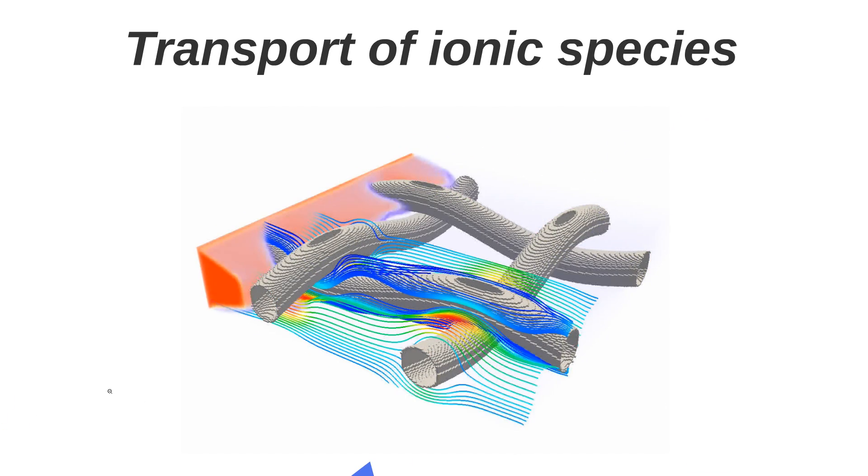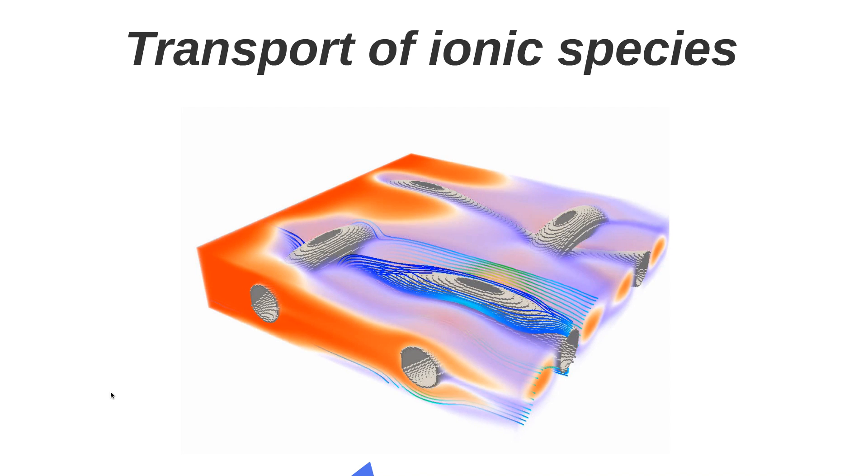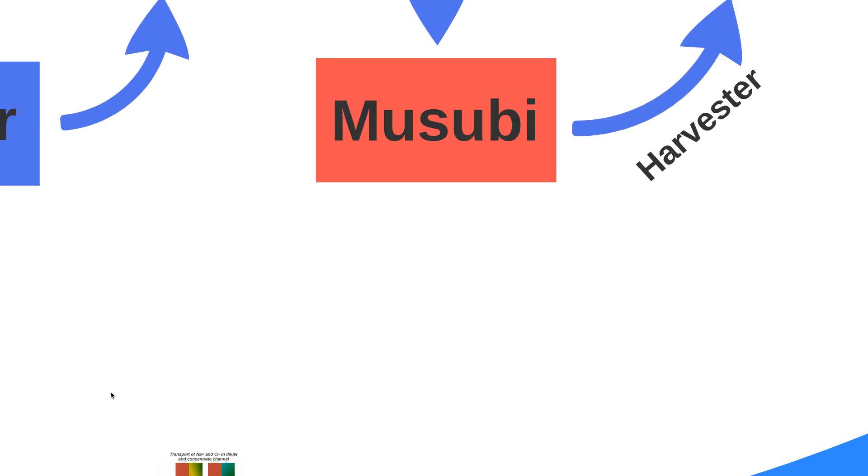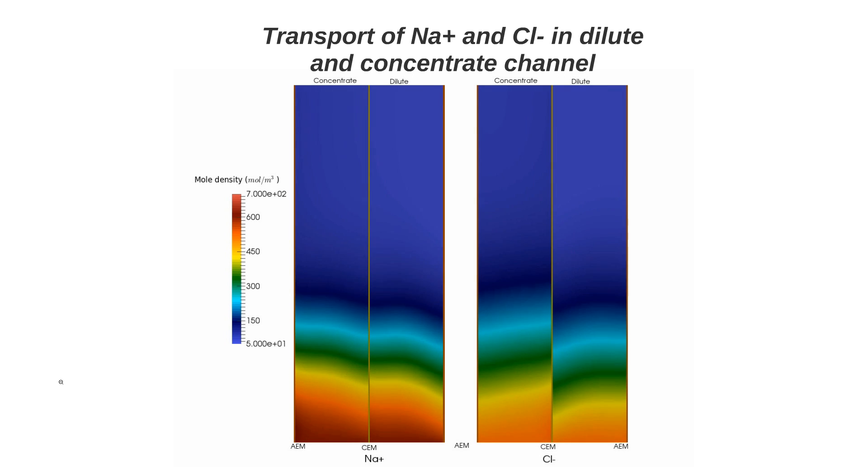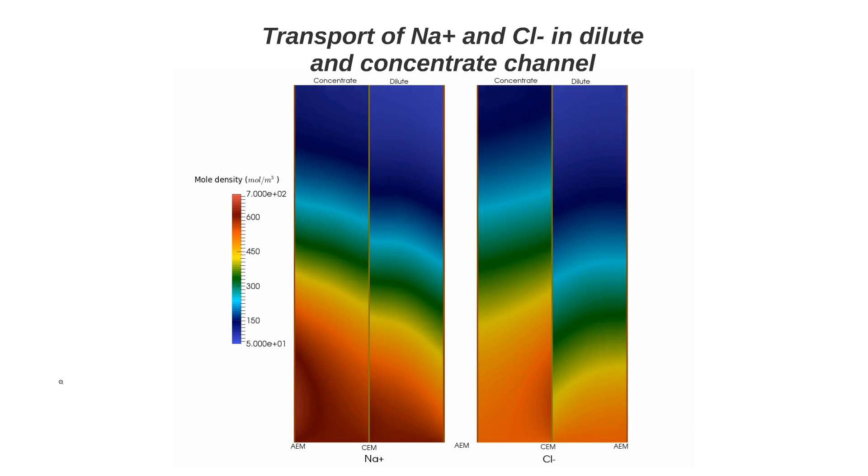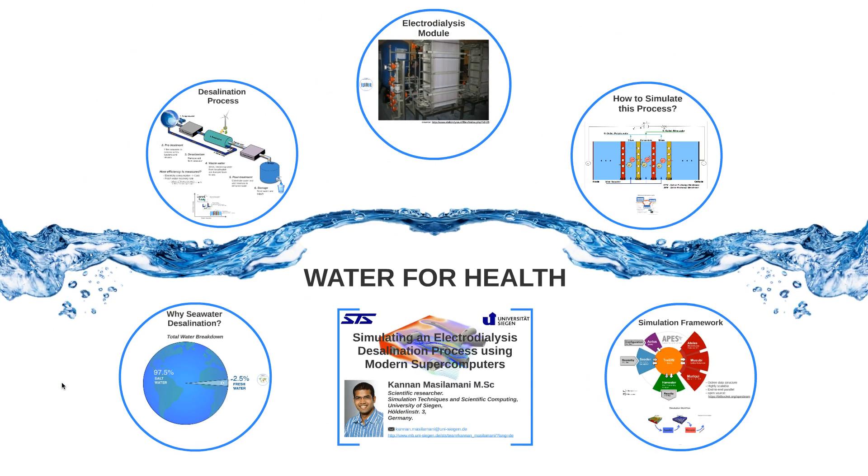The animation shows the transport of ionic species around the spacer channel between the membranes with external electrical force. We can also simulate the transport of sodium and chloride ions along this channel due to pressure drop and also towards membrane due to electrical force resulting in dilute and concentrated channels. Thus, we can use our simulation framework to simulate electrodialysis process instead of conducting several laboratory experiments which are time consuming and expensive.